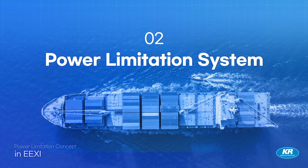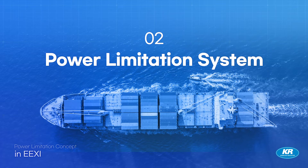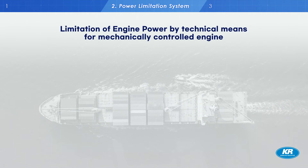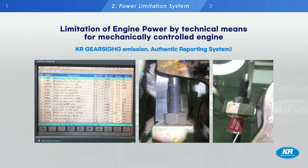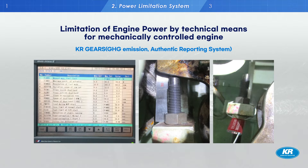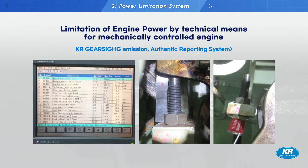This is the power limitation method applied to mechanically controlled engines. Generally, this type of engine is commanded by the bridge maneuvering system, which is called BMS. The BMS orders the mechanical governor to adjust power and RPM by changing the fuel index. This engine also has a manual control lever on the local engine side to adjust power and RPM in case of an emergency situation.